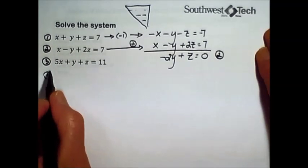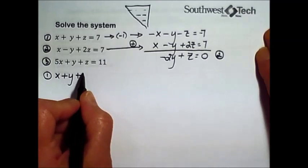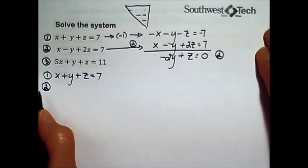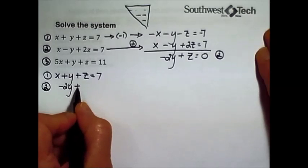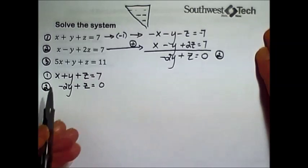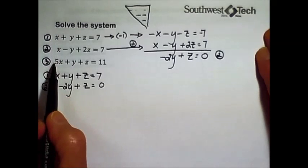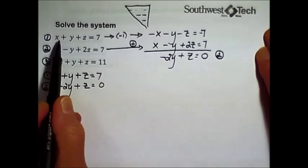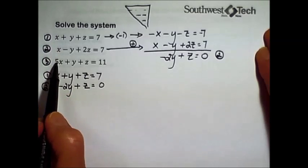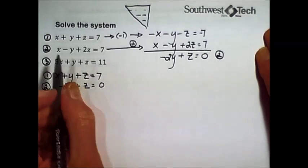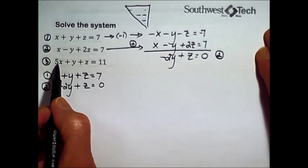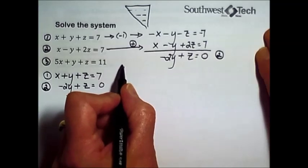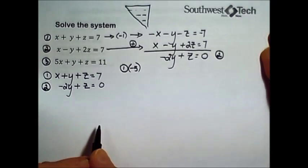My first equation is going to stay the same, x plus y plus z equals seven. My new form of equation two is negative two y plus z equals zero. My next step is to work with equation one and equation three to eliminate the x in equation number three. I plan to multiply equation number one, every term, by negative five.